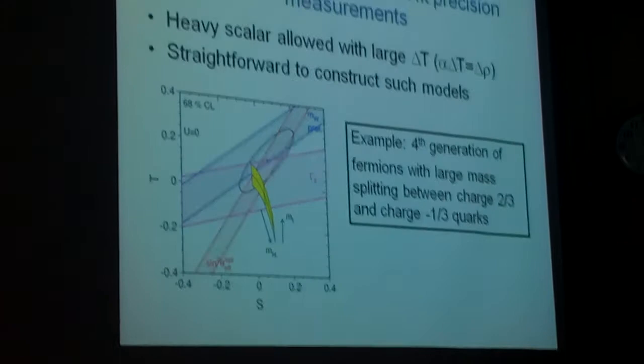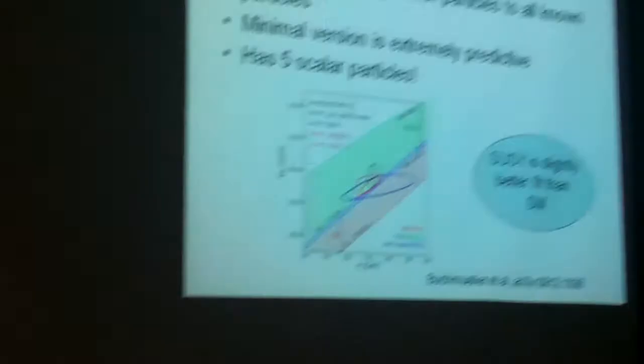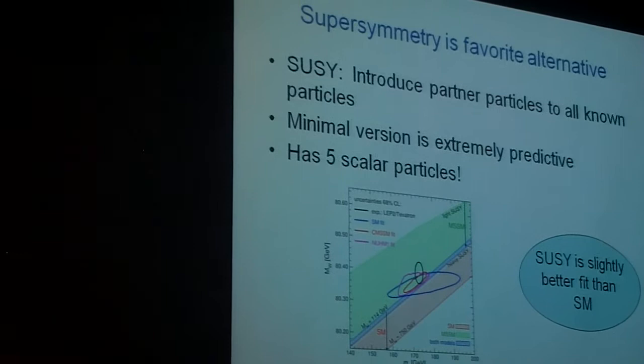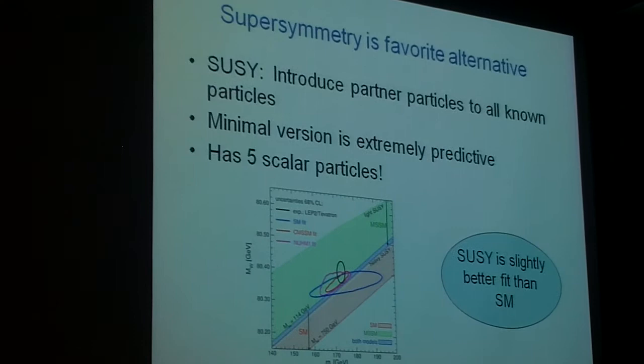Supersymmetry is a favorite alternative to the standard model. If you want to compare your predictions with the predictions of some other theory, well, supersymmetry is our favorite. So supersymmetry, you have a partner particle for all the known particles. The electroweak symmetry breaking is broken in exactly the same way as in the standard model, except you have five scalar particles now instead of just one. But the nice thing about supersymmetry is that the minimal version is extremely predictive. So this is exactly the same plot as I showed you before, the top quark mass and the W mass.